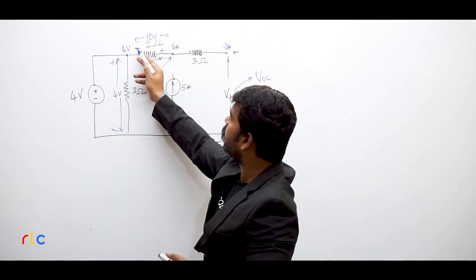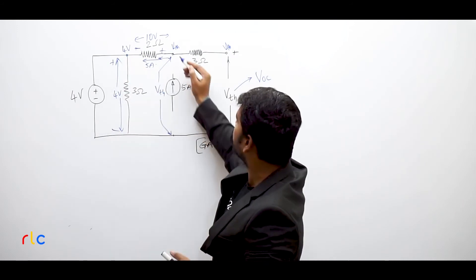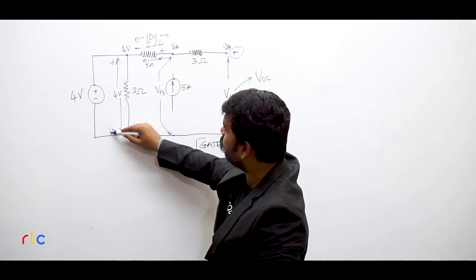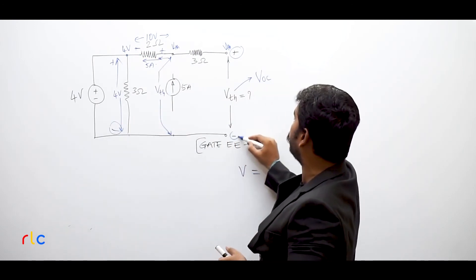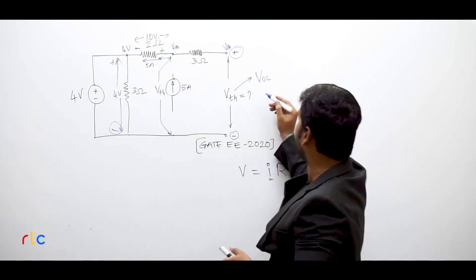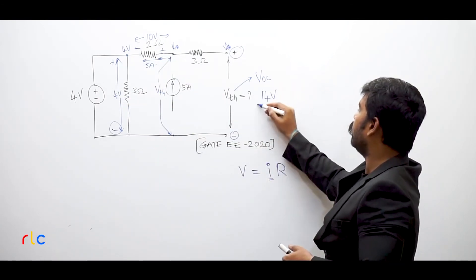So positive negative, negative connected to positive, and this is the negative. So this positive itself reflects here as positive. This is only the negative over here. So directly, 10 volts plus 4 volts, VTH is equal to 14 volts.